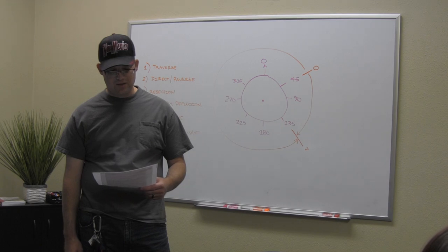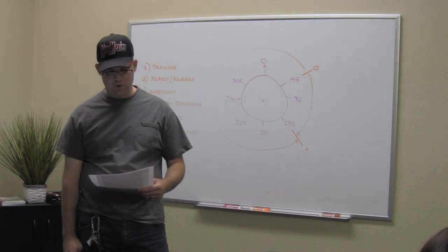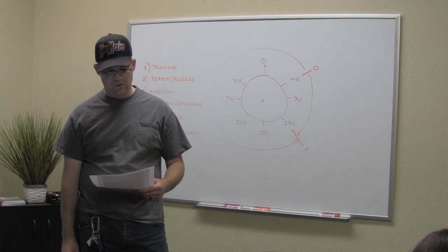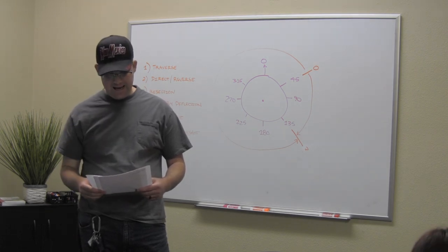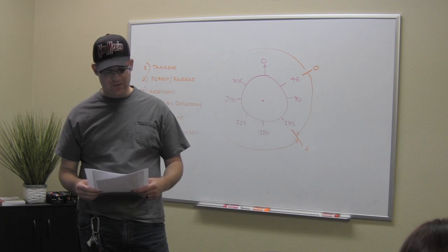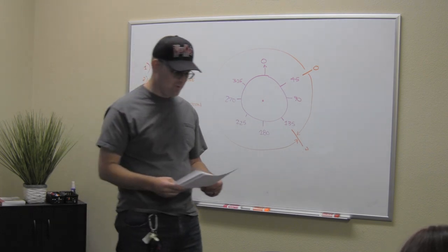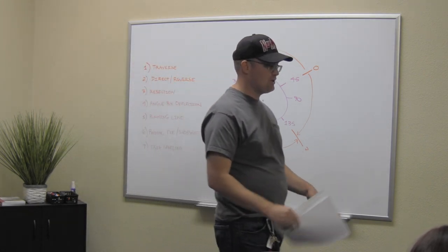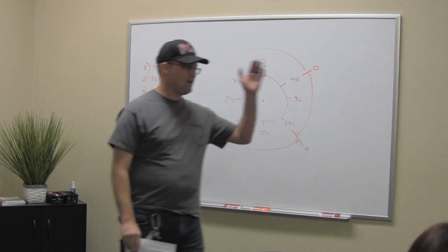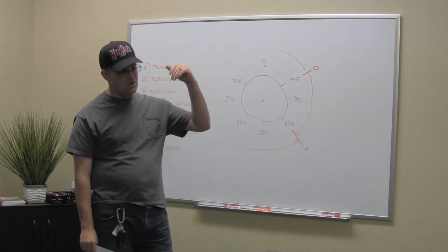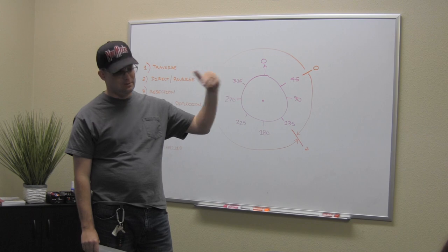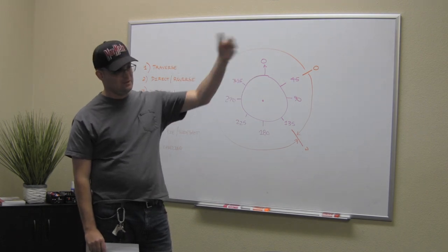Question number two: cross sections — are surveys at regular intervals in what type of surveys? The answer is A: route surveys and hydrographic surveys for flood modeling. When you're doing a route survey, they tell you to cut a section every 100 feet.